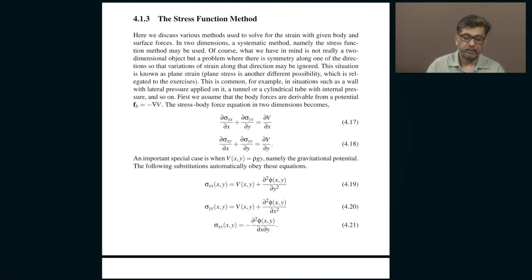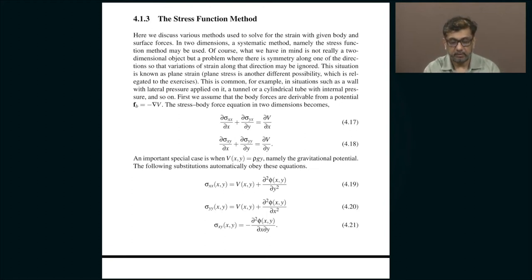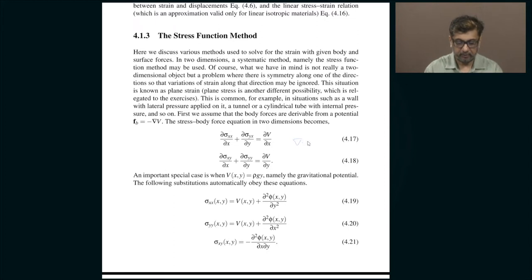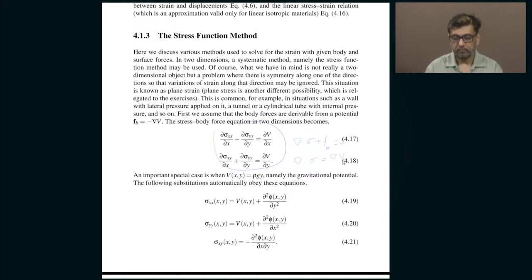First, assume the body forces are derivable from a potential - a conservative force like weight. There is a potential energy V and the negative gradient gives the force. The divergence of sigma plus the body force equals zero, which means divergence of sigma equals grad V. I assume a two-dimensional material with two-dimensional body forces where the applied stress and body forces balance so that the material does not accelerate - it simply deforms.